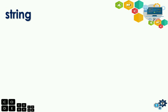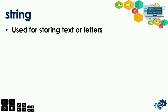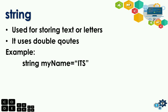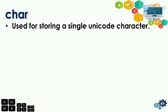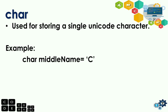Next, string — used for storing text or letters. It uses double quotes. Example: 'string myName = "ITS";' — so string is for text or letters, and it should always use double quotes. Next, we have char — used for storing a single Unicode character. Example: 'char middleName = 'C';' — it is used for a single character, and it uses single quotes.